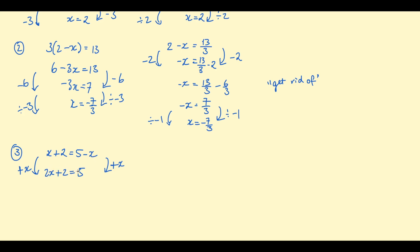Now we have 2x plus 2 equals 5. Subtract 2 from both sides: 2x equals 3. Then divide by 2: x equals 3 on 2, which is 1 and a half. To double check: 1.5 plus 2 is 3.5 on the left, and 5 take 1.5 is also 3.5 on the right. That passes the check.